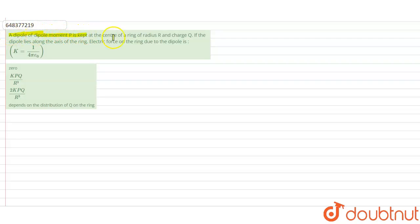A dipole of dipole moment p is kept at the center of the ring of radius r and charge q. If the dipole lies along the axis of the ring, electric force on the ring due to the dipole. k is given as 1 by 4 pi epsilon naught and we have various options here.